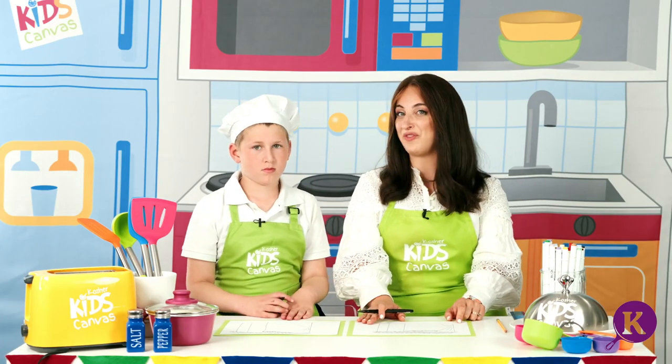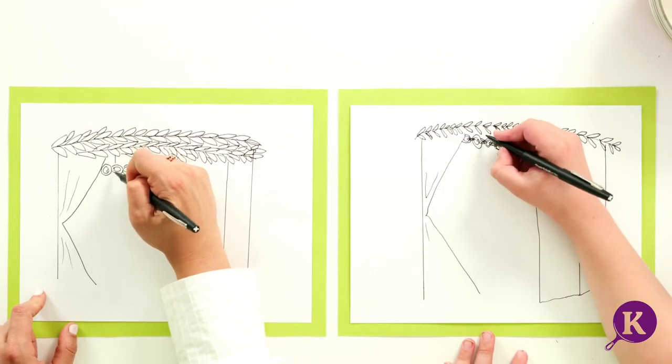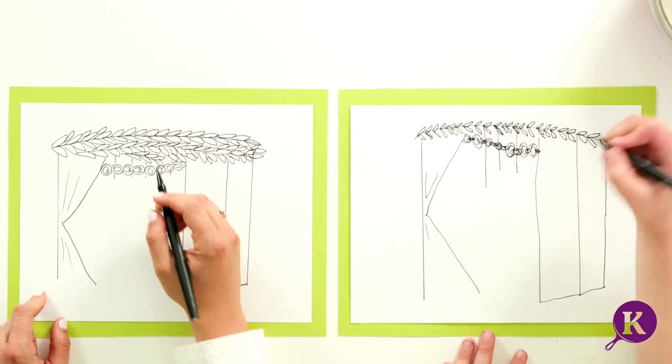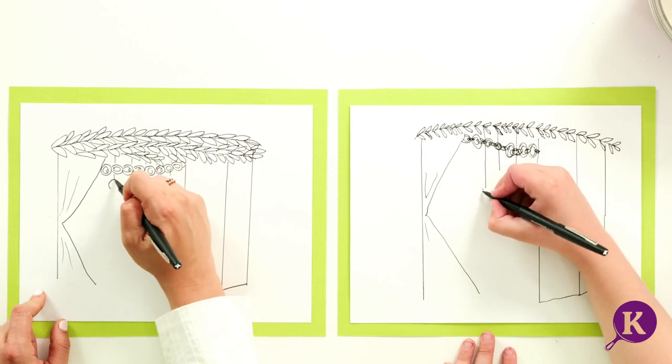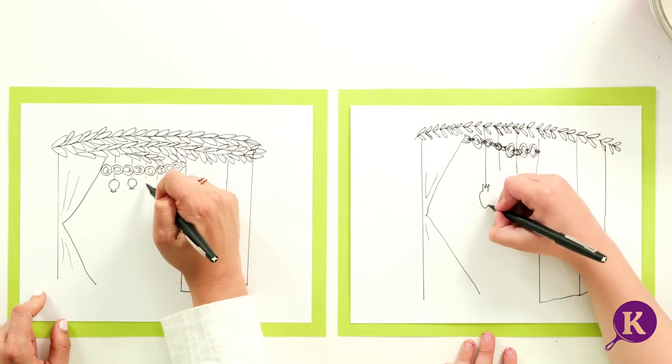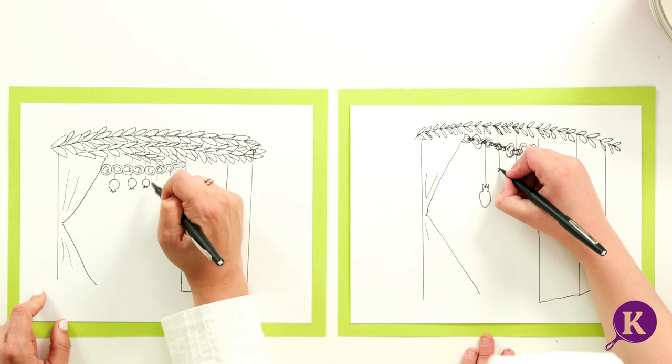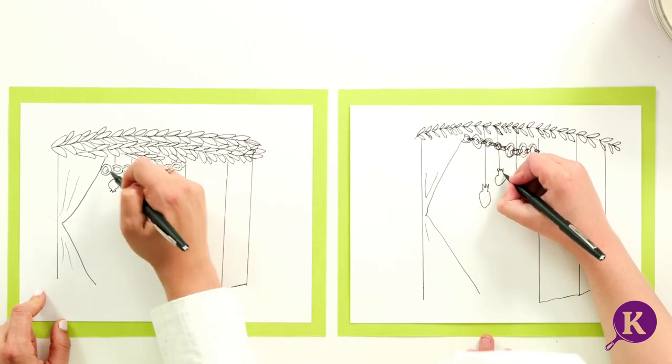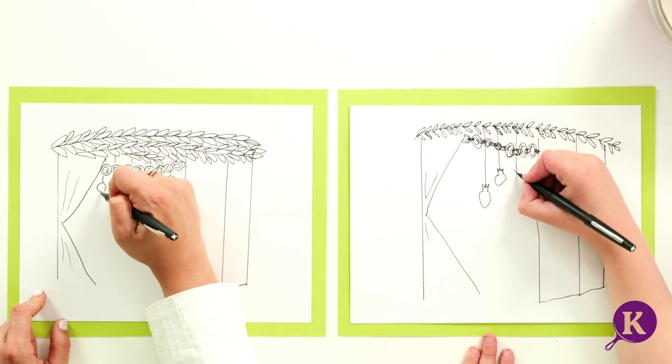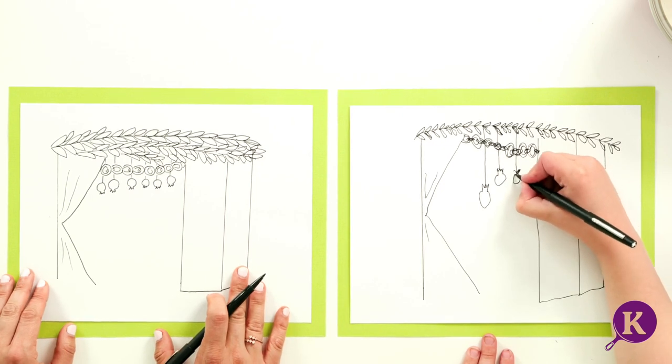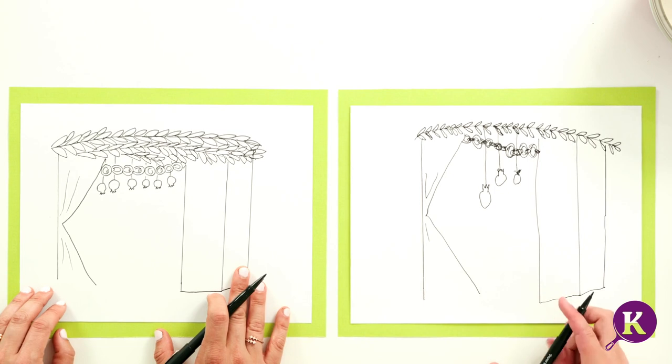And I also think it's so fun when you see dangling fruit from the top of the Sukkah. So we're going to make some strings coming down with little pomegranates hanging down. We're going to make a circle with a little upside down crown of the pomegranate. Make some different fruit if you'd like. So cute. Oh, an apple. I love that.